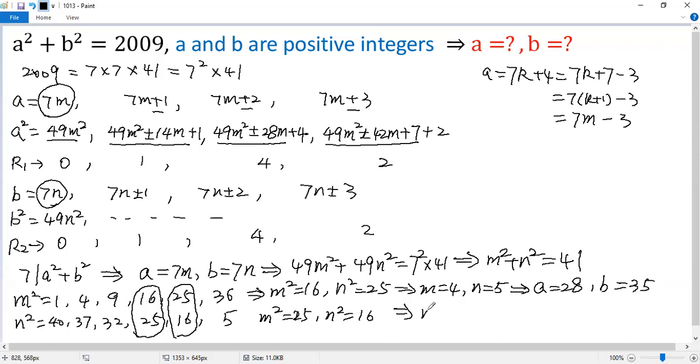Similarly, m equals 5, n equals 4, so a would be 35, b would be 28. So we only get two solutions to the given equation.